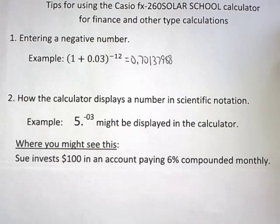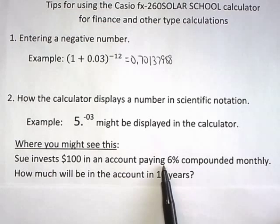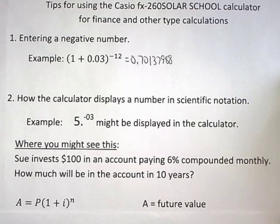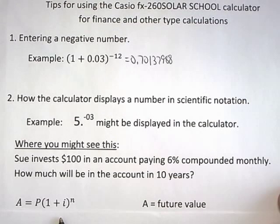Well it's the calculator's way of showing something in basically in scientific notation. And where you might see that, I thought it would be nice just to sort of work an example where you might actually see that show up and then show you how to deal with it through that example. It says Sue invests a hundred dollars in an account paying six percent compounded monthly. How much will be in the account in ten years? Now this is just a plain old compound interest problem. So you would be using this formula. A is equal to P times the quantity one plus i raised to the nth power.